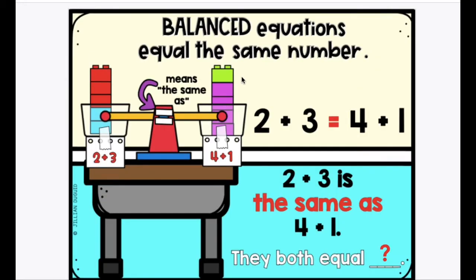Balanced equations equal the same number. When you see this equal sign, I want you to read it as the same as. 2 plus 3 is the same as 4 plus 1. They both equal what number? Five cubes total. There is the same number on both sides.